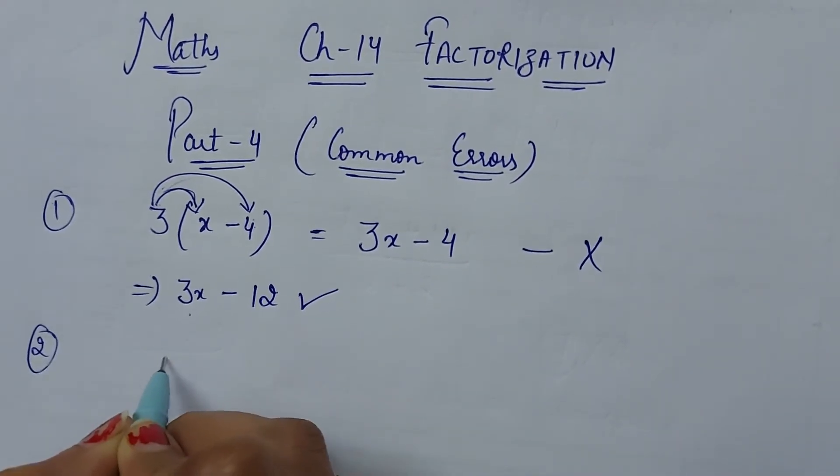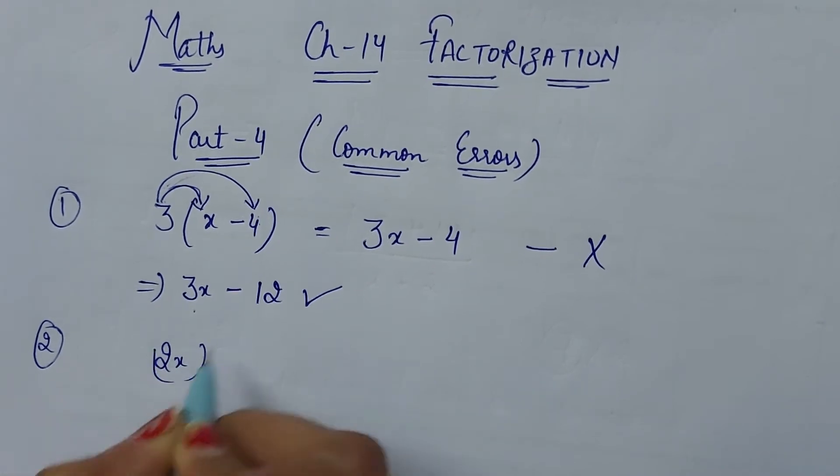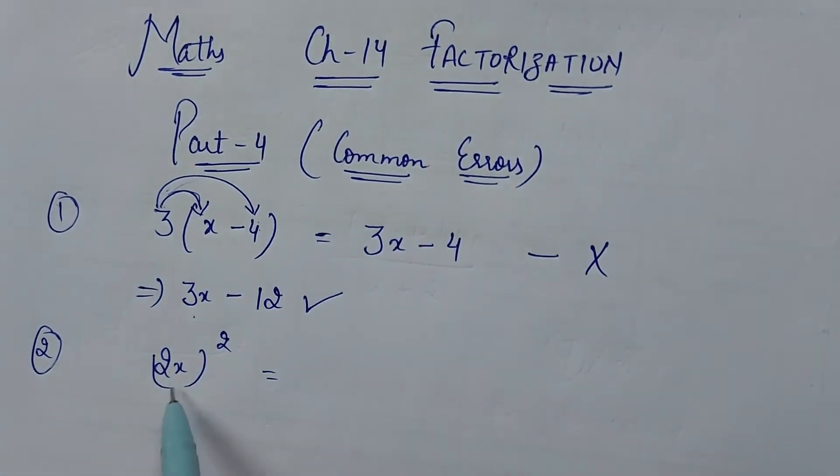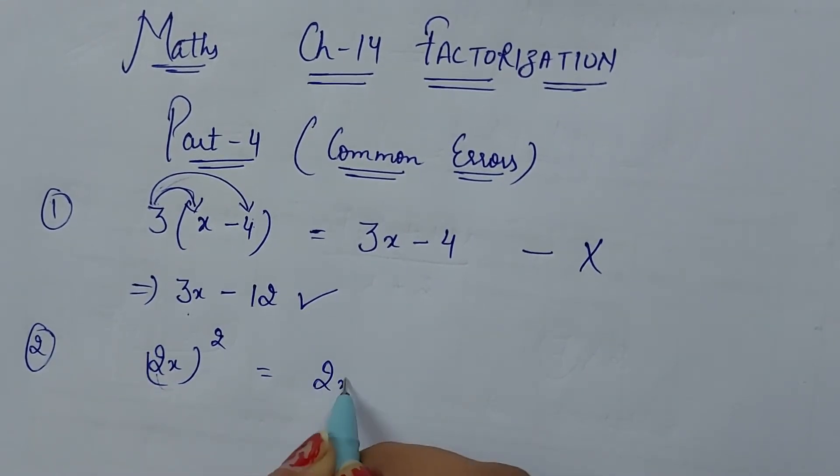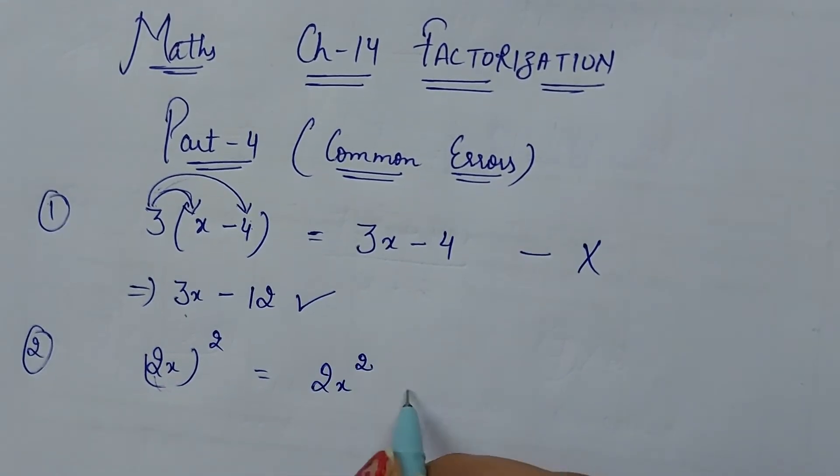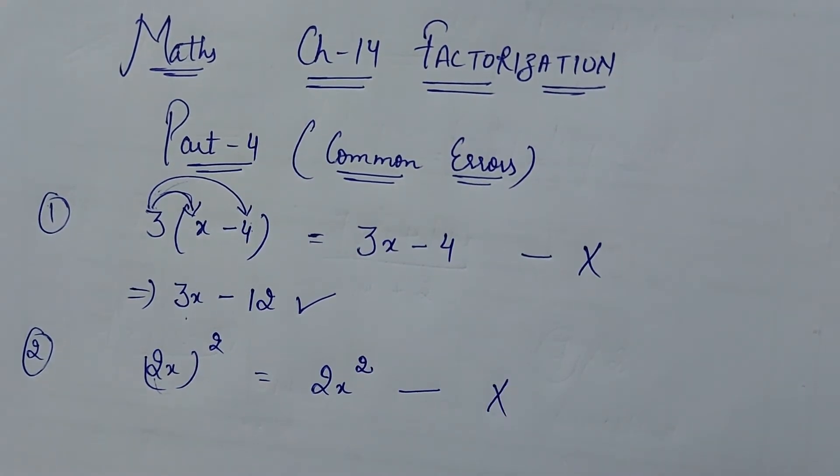This is the correct answer. Now second example is 2x square. Friends remember it's a whole square. Jabki students karte hain, 2x square ka without whole square aise hi likh dete hain. Kya ye correct hai? No. It's a wrong answer.